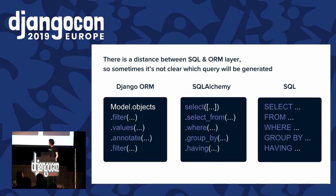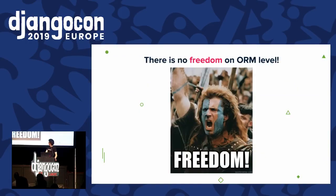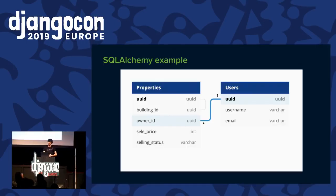To illustrate the mapping: in a Django ORM query, the first filter becomes the WHERE clause, values() becomes GROUP BY, annotate() is the list of aggregations, and the last filter becomes the HAVING clause. So it's not directly mapped to SQL level. When building advanced queries in ORM, you really feel you don't have enough freedom.